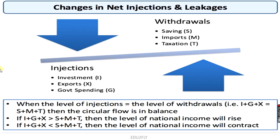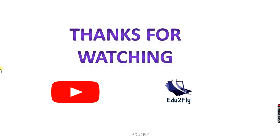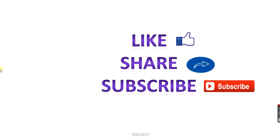In the two-sector economy without the financial market, there are no leakages. In the two-sector economy, investment is an injection. In the three-sector economy, injections are investment plus government expenditure. And in the four-sector economy, injections are investment, government expenditure, and exports. Thanks for watching — if you like the video, hit the like button, share with your friends, and subscribe to the channel.